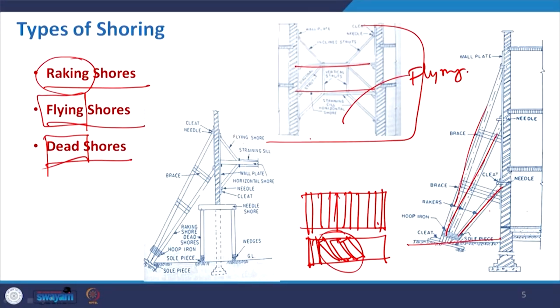Looking at the picture, you can see the shoring arrangement giving support with some members — which can be made of wood, steel, or if the span is too large, a truss or space frame arrangement. That makes it possible to support two buildings away from each other with no connection to the ground — leading to your flying shore. In this case, the wall is being supported with inclined members — like comparing it to the way we put books in racks — this is the racking shore.